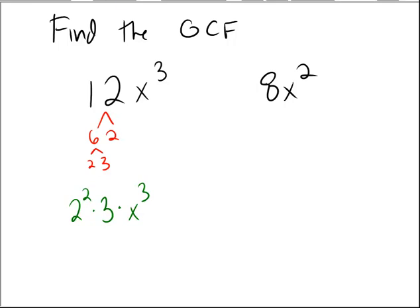And 8 breaks down into 2 times 4 and 2 times 2. So the 8x squared would break into 2 cubed times x squared. So again, just like before, to make the GCF, I'm going to take the greatest common factor.